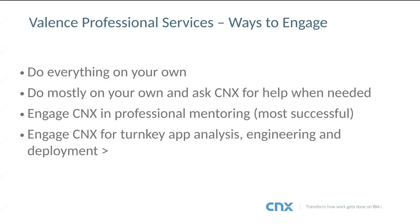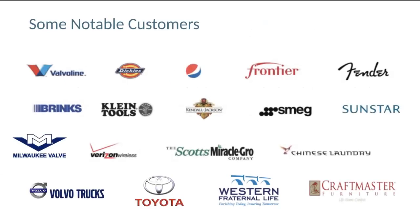Some notable customers: our first release of Valence was version 1 in 2008, so we've been around quite a while. Valvoline in the upper left has the record for the number of Nitro apps deployed — it must be in the thousands when I look at their system across all areas and departments. What you'll see today is used very heavily by a lot of companies.